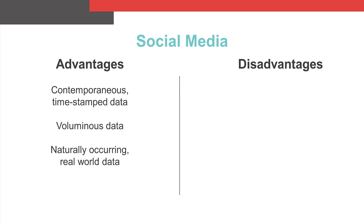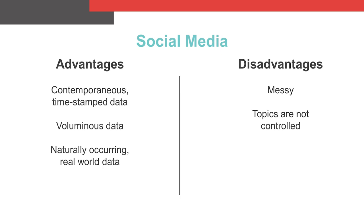But in the disadvantage column, as found data, it's messy. It's subject to the idiosyncrasies of different platforms. The data collected may not be directly relevant to the topic of interest, or the relevance to the topic may be surprising and unexpected. And finally, social media data is relatively new to litigation, and the standards for analysis and acceptance by the courts are evolving.